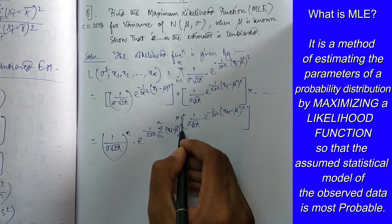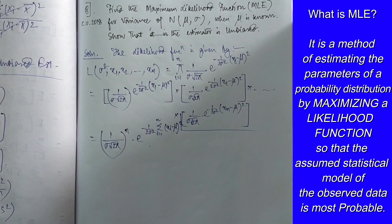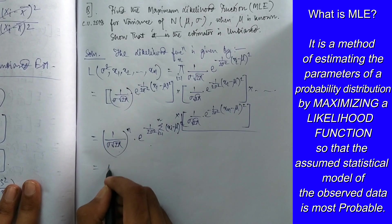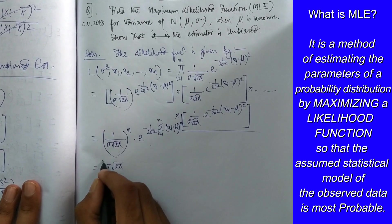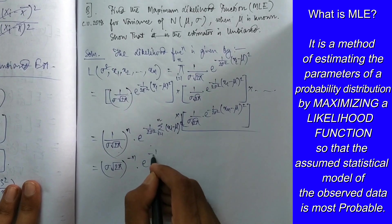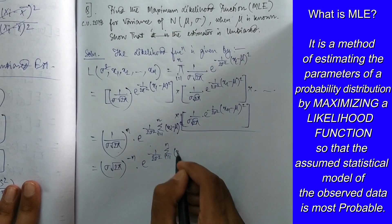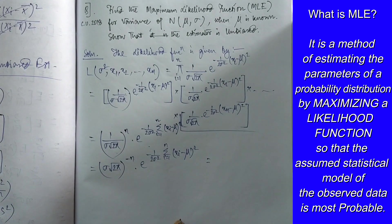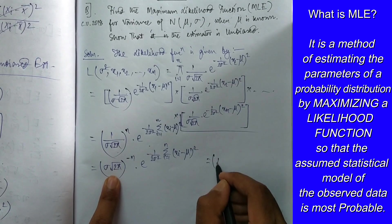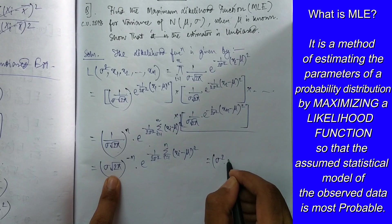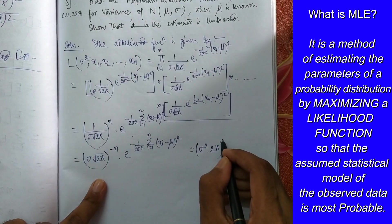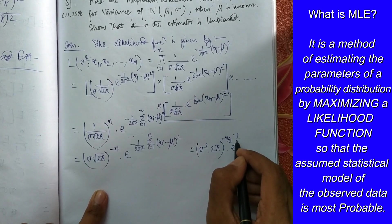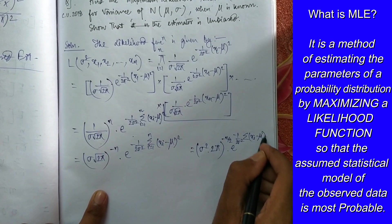Moving the denominator up, the 1/(σ√(2π)) term becomes (σ√(2π))^(−n). We can rewrite this as (σ² · 2π)^(−n/2), and the rest remains as e^(−1/(2σ²) · Σᵢ₌₁ⁿ (xᵢ−μ)²).